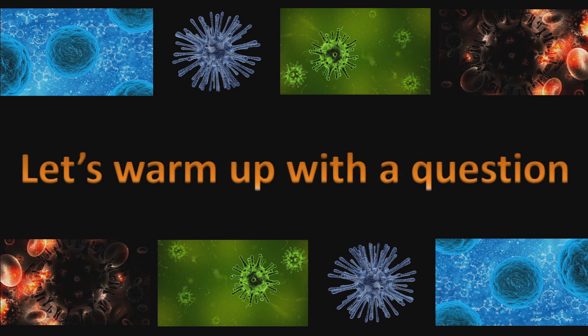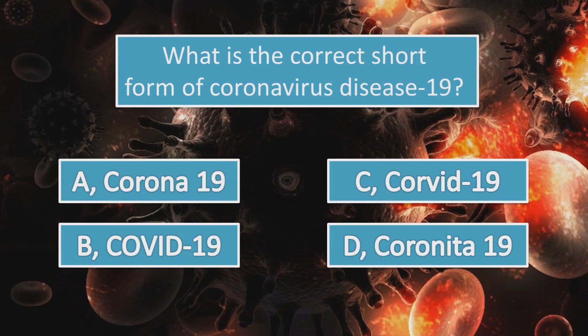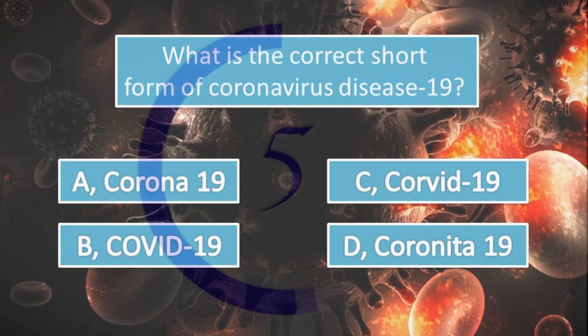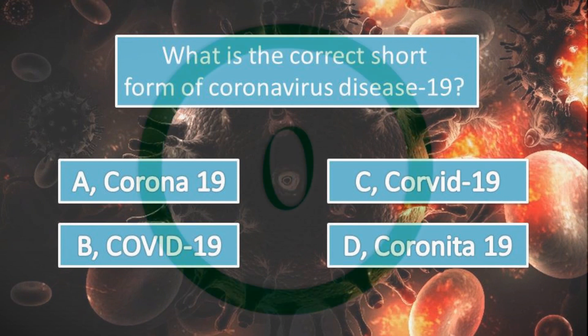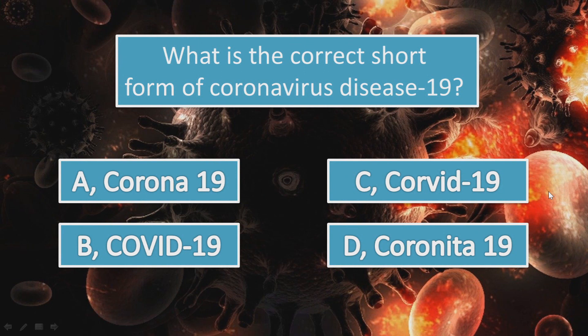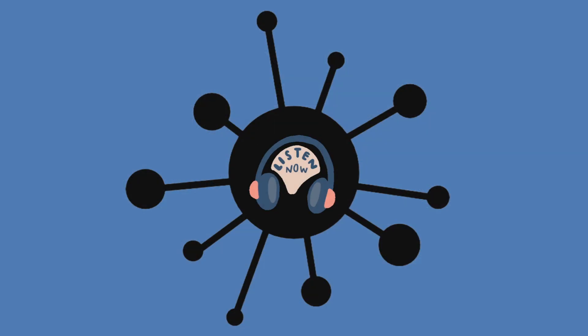Are you ready? Let's warm up with a question. What is the correct short form of coronavirus disease 19? The correct answer is, of course, B, COVID-19. And now, listen.